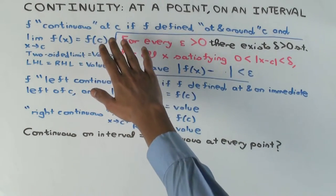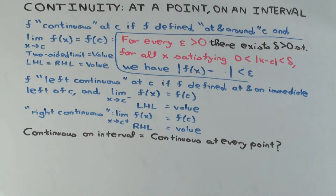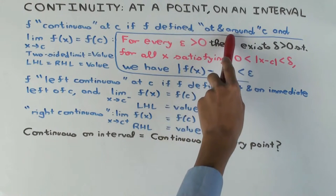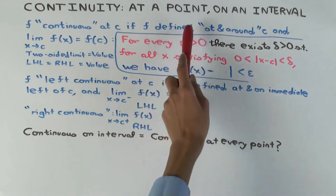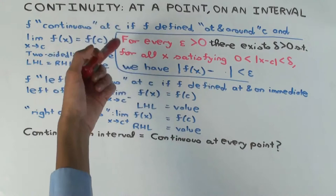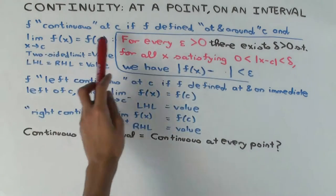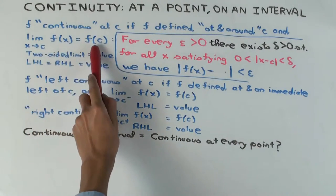We say that a function f is continuous at a point c in the domain if f is defined at c. So f has to first of all be defined at the point. If it's not defined at the point, you cannot talk of continuity. It also has to be defined around the point — on the immediate left and right — meaning there's an open interval containing c such that f is defined on that interval. If it's defined at and around c, then it makes sense to ask whether f is continuous at c, and we say it's continuous if the limit as x approaches c of f equals f(c).